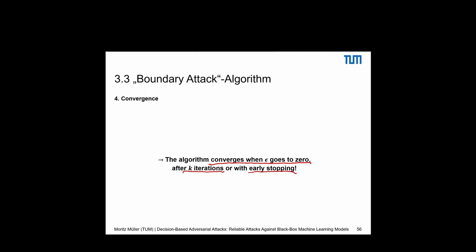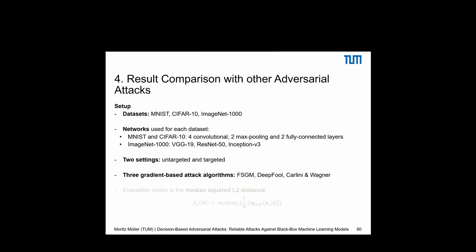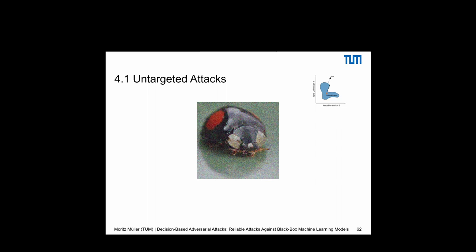The experimental setup uses three well-known datasets: MNIST, CIFAR-10, and ImageNet-1000. For MNIST and CIFAR-10, a vanilla convolutional neural network is used; for ImageNet-1000, VGG-19, ResNet-50, and Inception-v3. The boundary attack is compared in both untargeted and targeted settings against gradient-based methods: FGSM, DeepFool, and C&W. The evaluation metric is the median squared L2 distance.